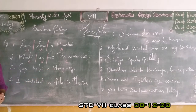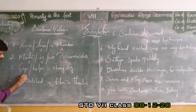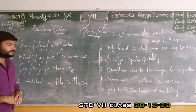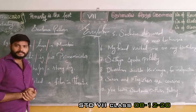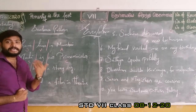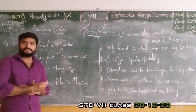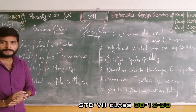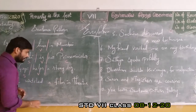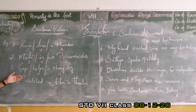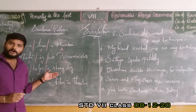Third sentence: 'Gopi helps a stray dog.' Gopi is the doer — subject. Helps is the action — verb. 'A stray dog' is the receiver of the action, so it is object. We have only one object in the sentence, so we need not worry about direct or indirect — just use 'object.'